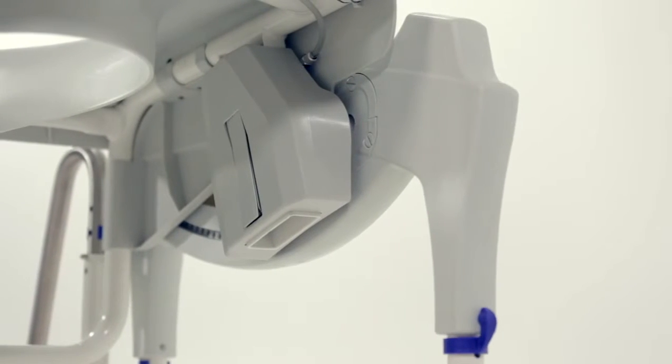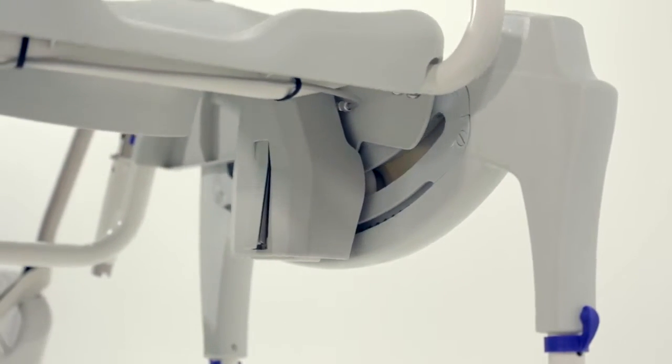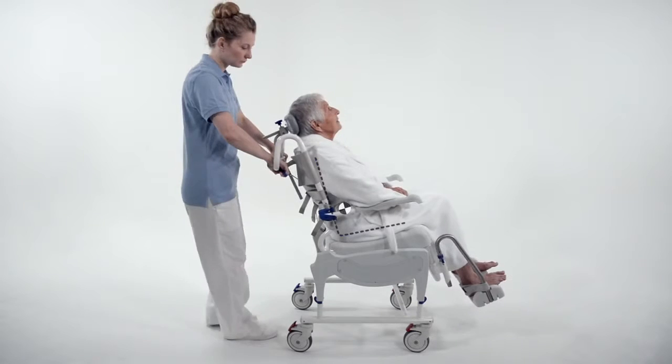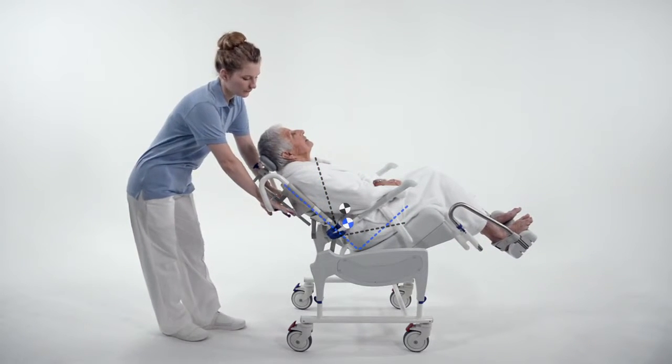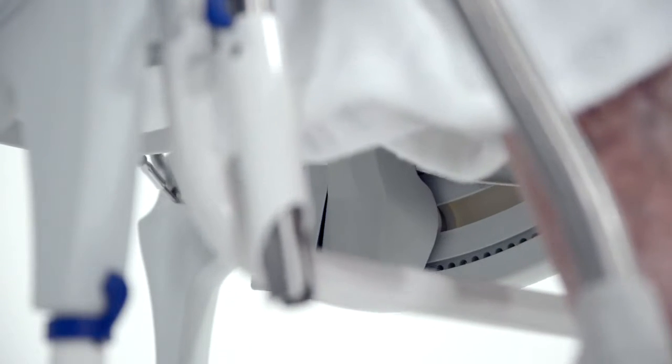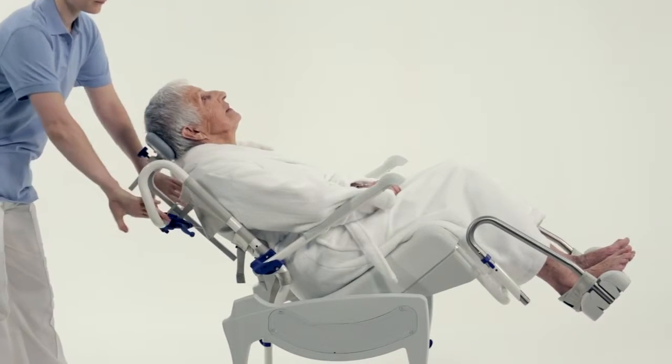Firstly, we have replaced the gas spring with a pivot and slide tilt mechanism. During tilt, the chair now moves downwards and forwards, which keeps the user's centre of gravity close to that of the chair, making the tilt operation lighter and more intuitive for the carer, whilst creating a smoother and more comfortable experience for the user.